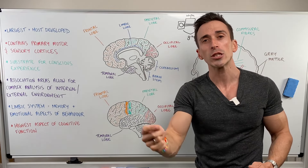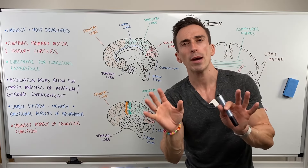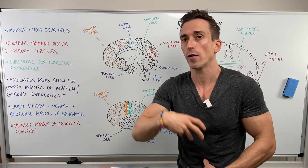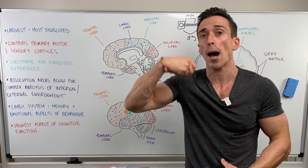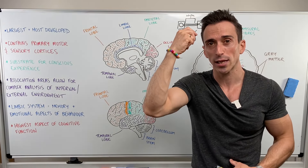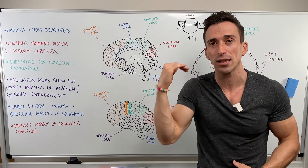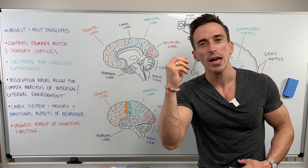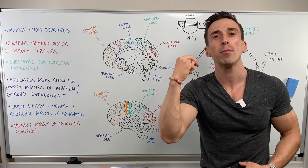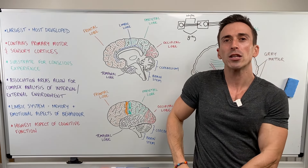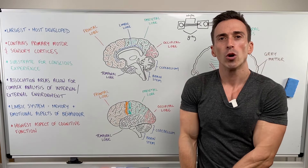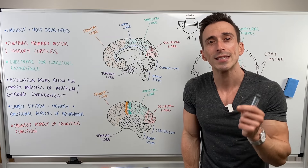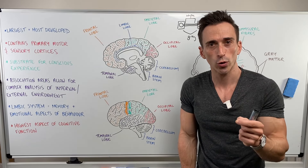When we look at the sensory cortex, this is where information coming from the external or internal environment arrives for us to be consciously aware of it. It's the highest level of integration of sensory information — this is where we become aware. Think about if you had your hand in your pocket: when you feel something in your pocket, that's going to the sensory cortex.